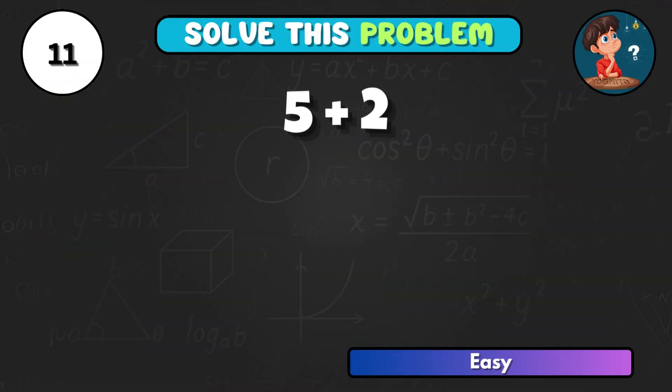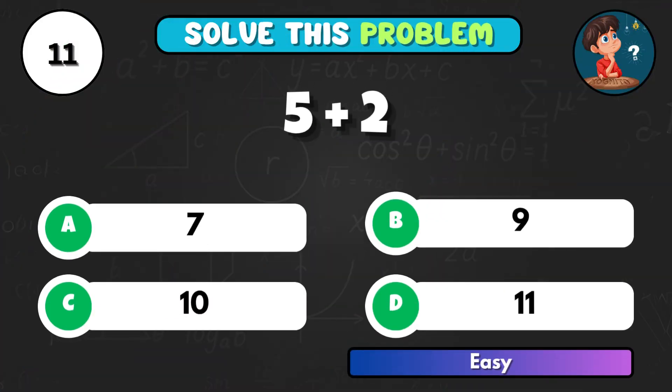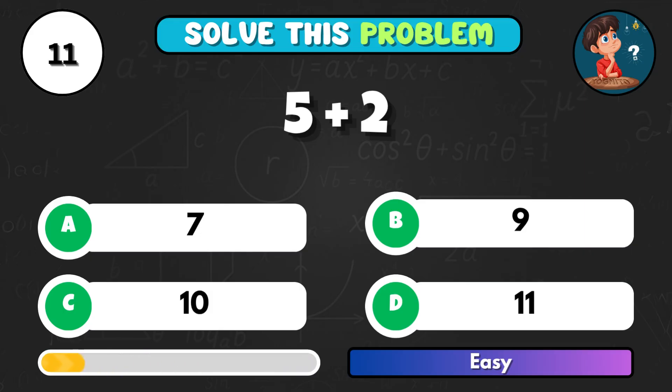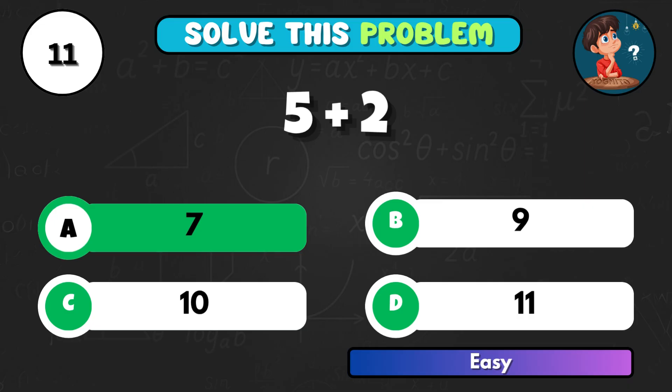Imagine 5 apples and you get 2 more. How many now? Option A, total is 7.